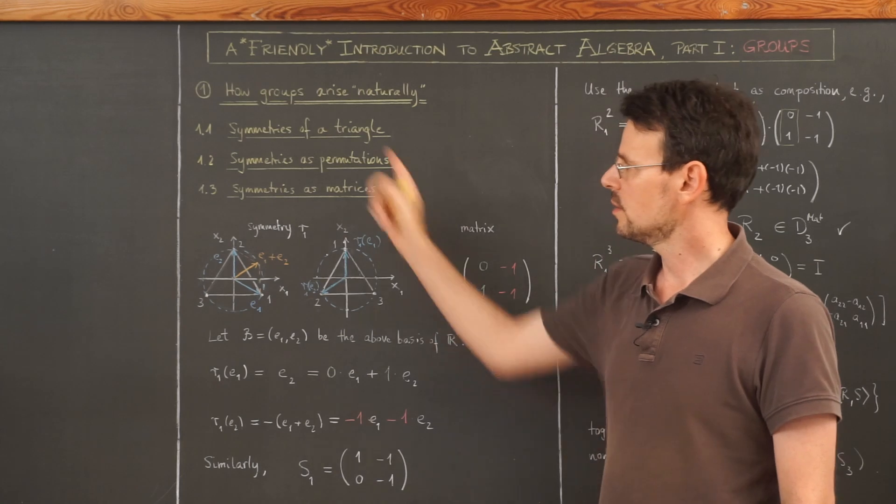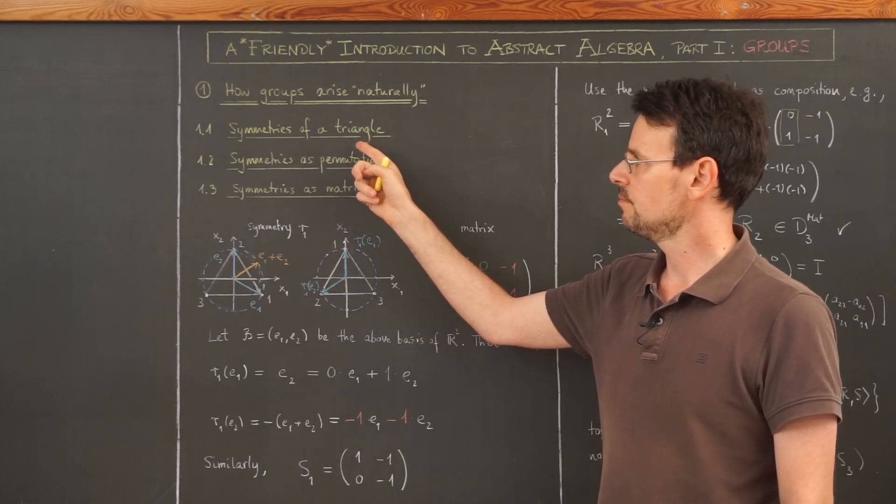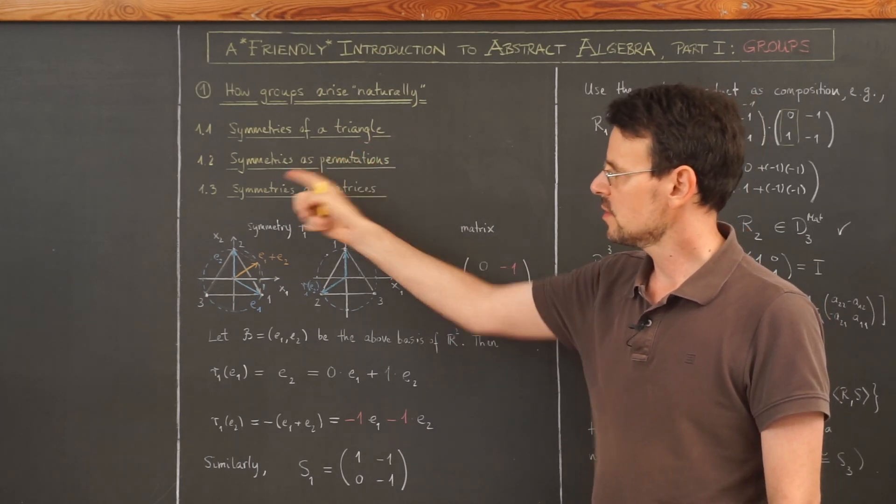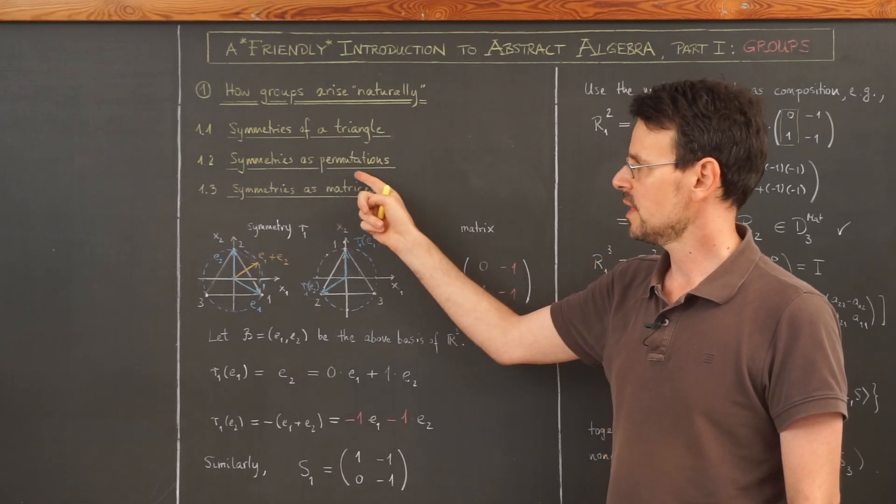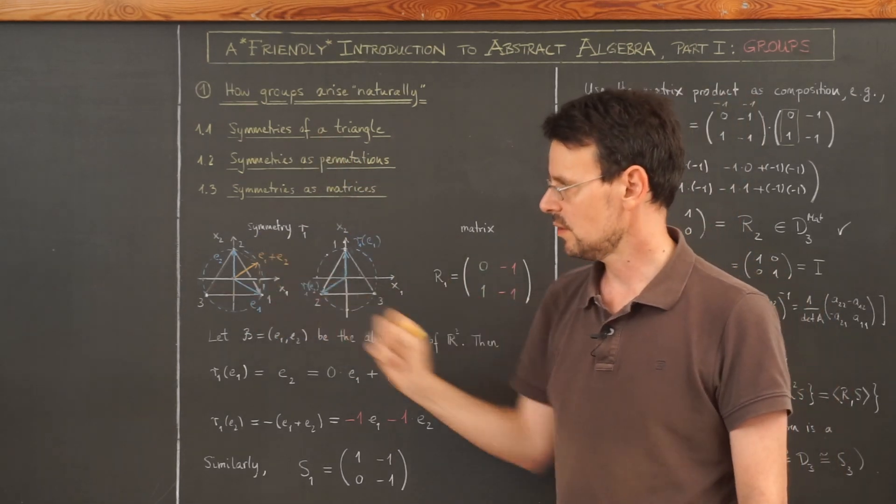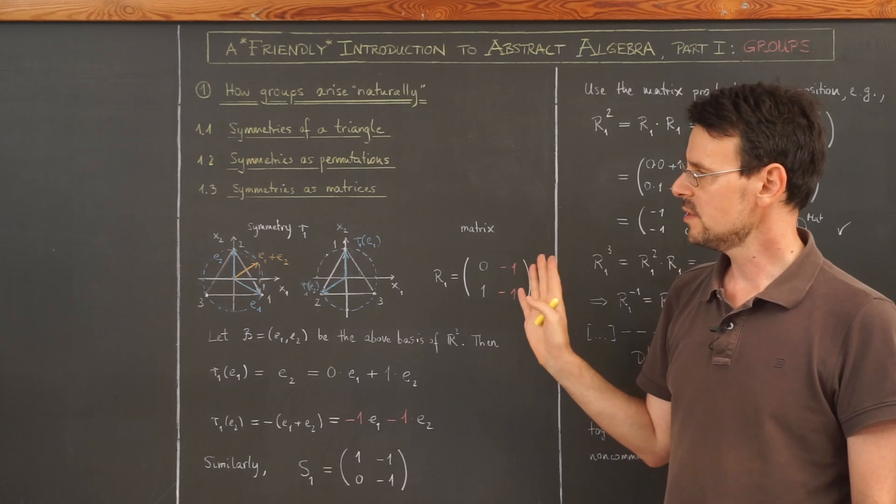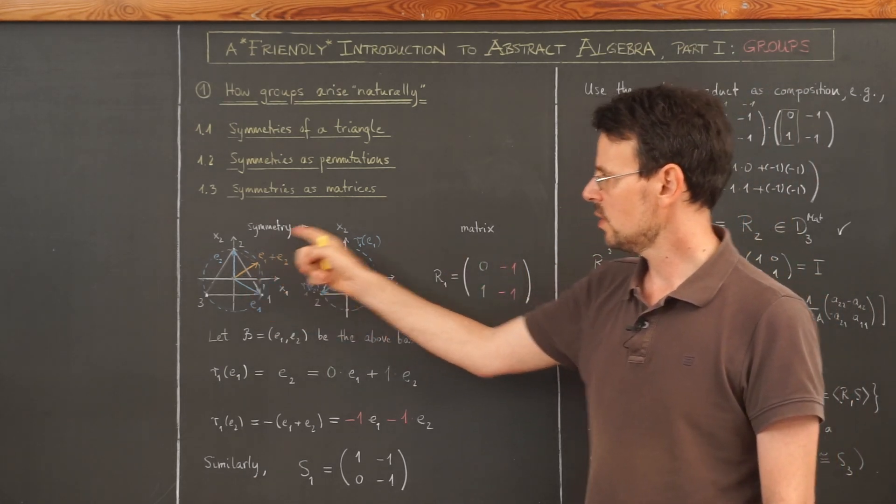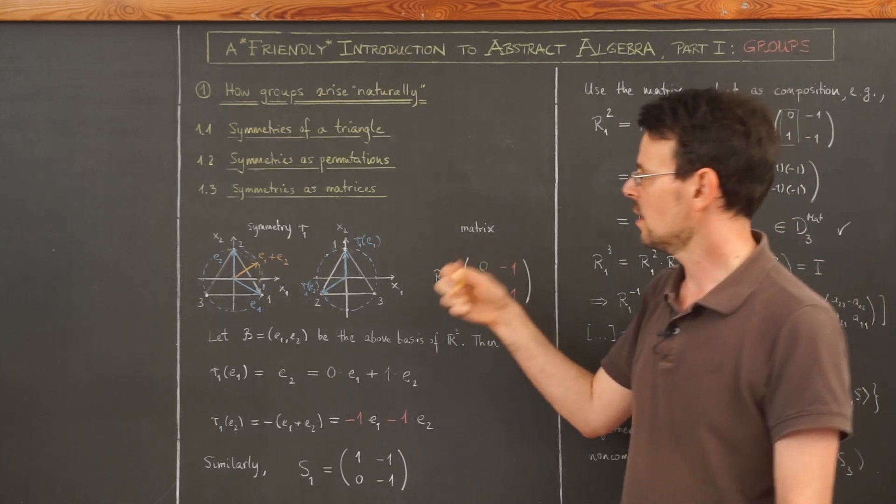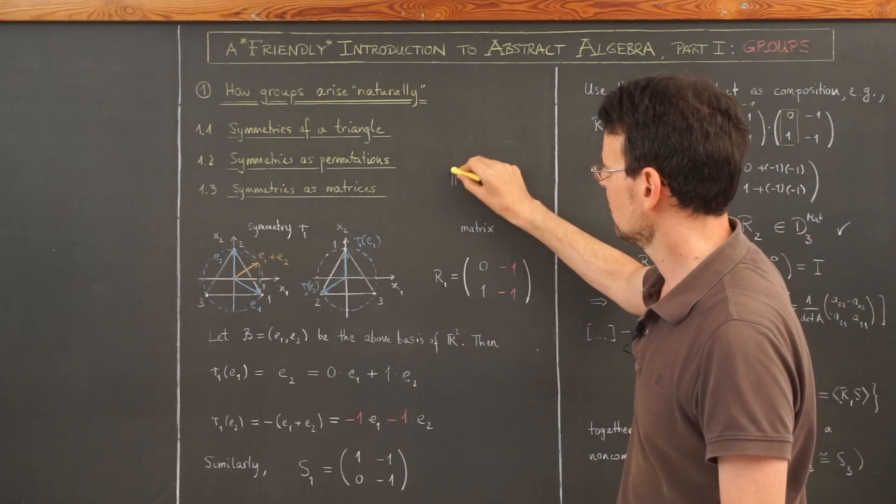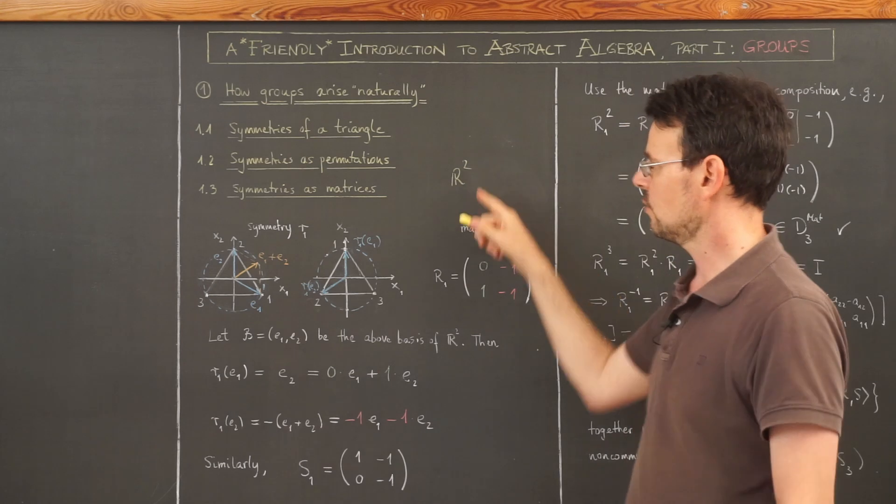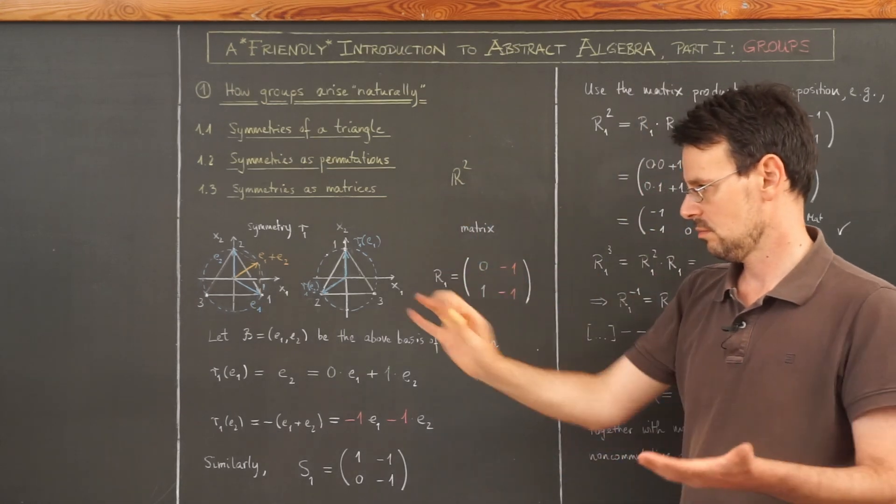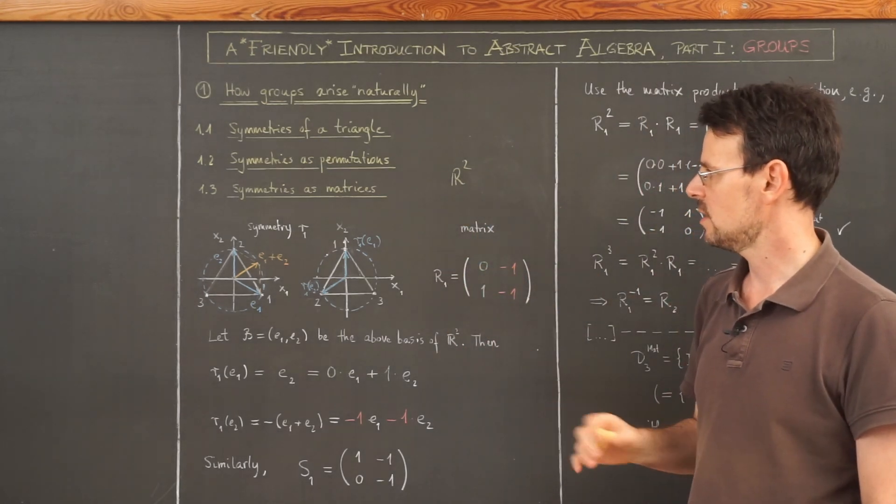Remember, we started with symmetries of a triangle. Then we saw that those can be represented as permutations on the vertices. And this week we are learning that we can associate any symmetry with a matrix in a vector space, namely R2, the Euclidean vector space of the plane.